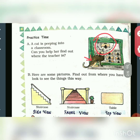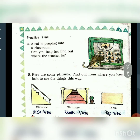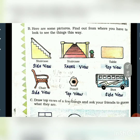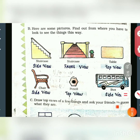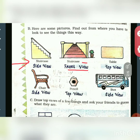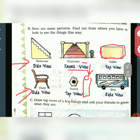Here are some pictures — find out from where you have to look to see things this way. This is the side view of a staircase, and this is the front view of a staircase. When we see the table from the top, we can see only the rectangle part. When you see from the side, the chair looks like this. A pencil looks like this; when you see from the top, you can see only the wood part and the center lead. And this is the side view of a bus.